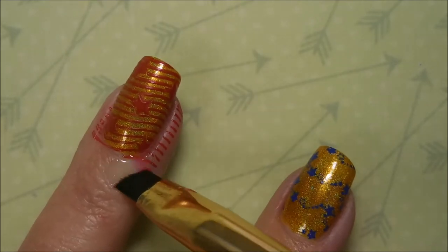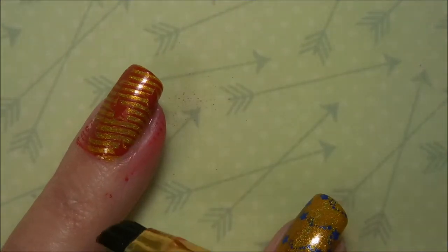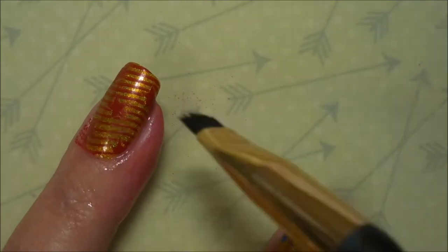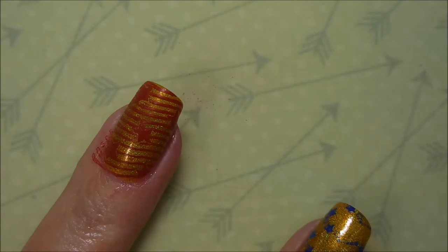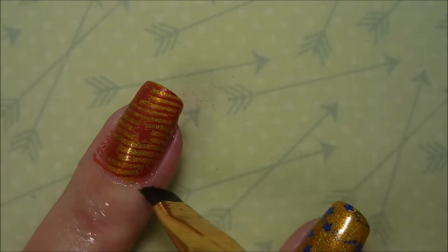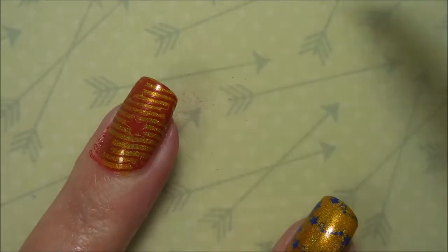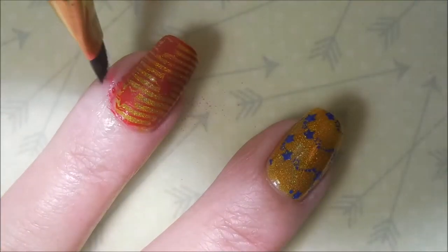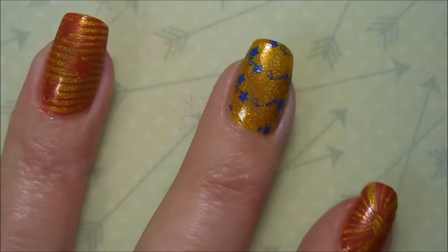So I'm going to go in with my cleanup brush and clean up this extra that's all over my fingers. And I'm just using pure acetone and my little cleanup brush and tidying that up before I get ready to do my top coat. Here we go. We're almost done. We're almost to the top coating time.